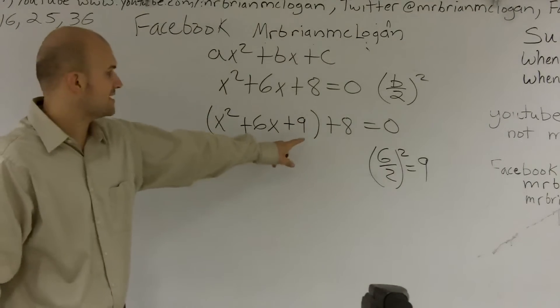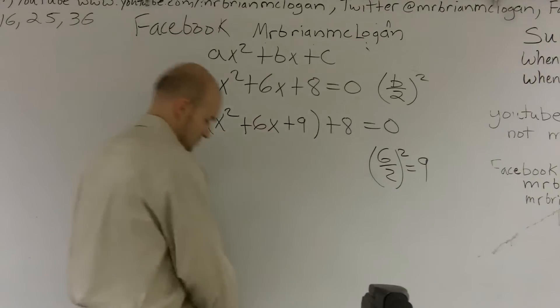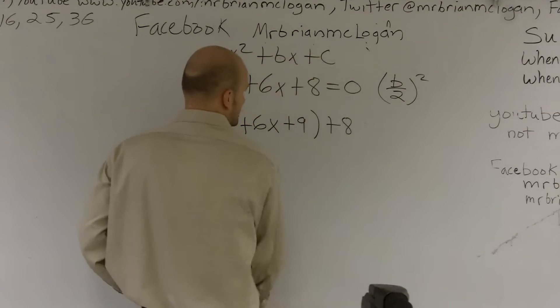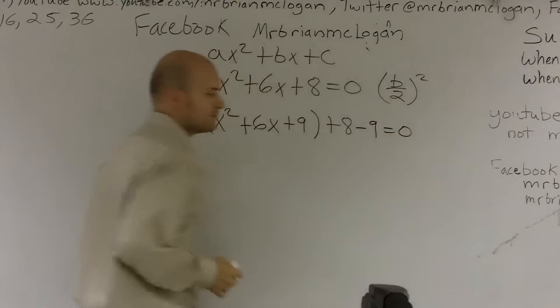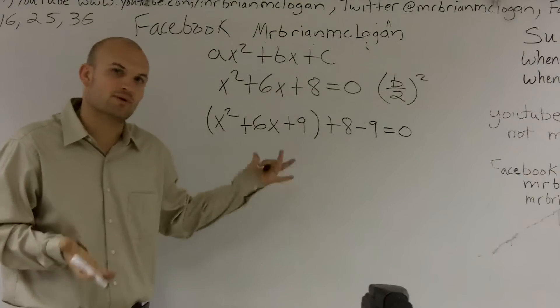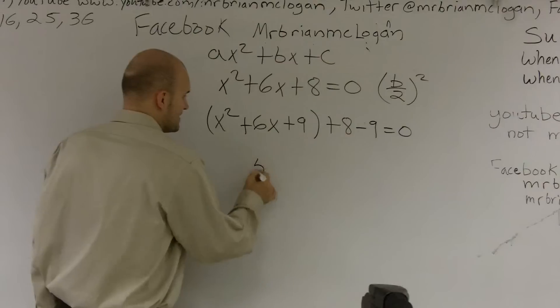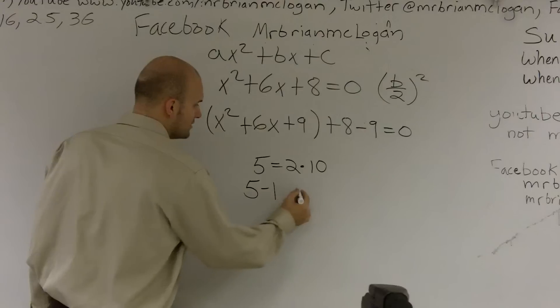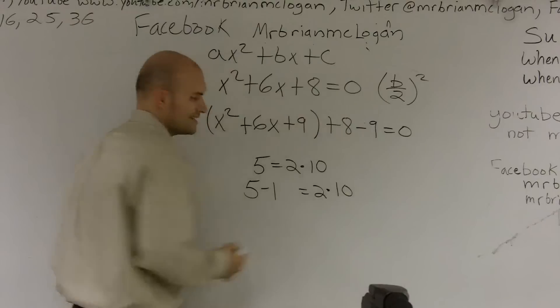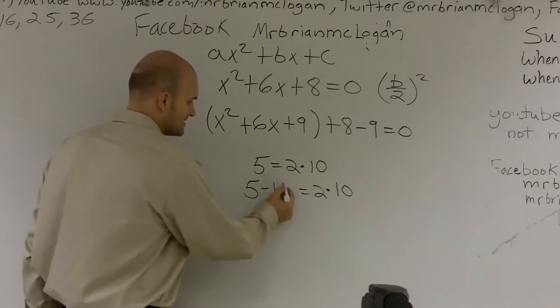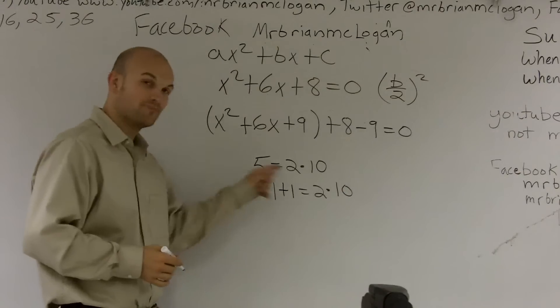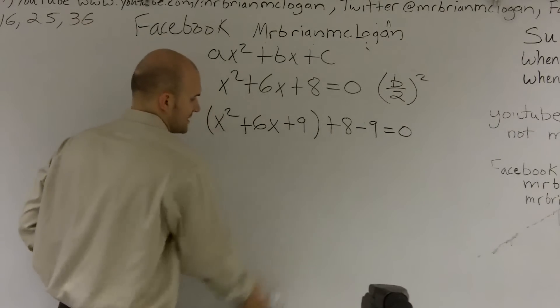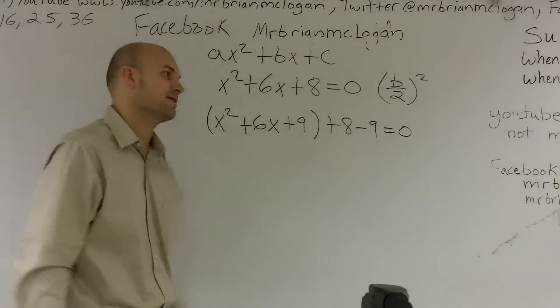Now, if you're going to add a 9 on the left side of the equation, you have to make sure that you subtract a 9 as well. And the reason why it's so important to subtract a 9 is then the equation wouldn't be balanced anymore. If I say 5 is equal to 2 times 10, and then I say 5 minus 1 is equal to 2 times 10, well, that's incorrect. These don't equal each other. But if I say 5 minus 1 plus 1 is equal to 2 times 10, well, that's correct. So whenever you're adding something inside those parentheses, you've got to make sure you add it outside the parentheses as well.